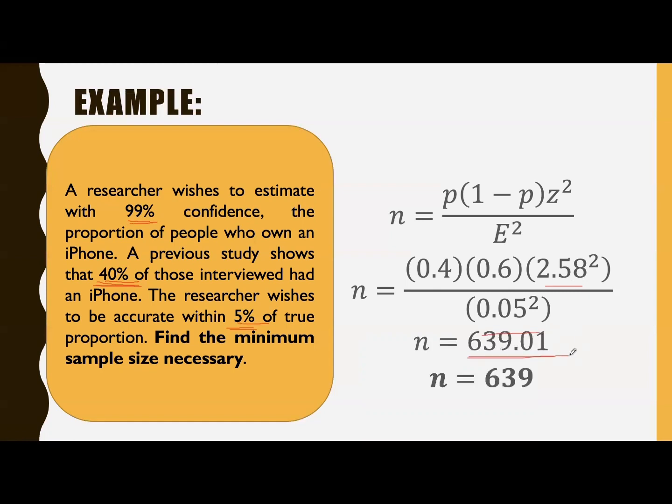And then divide, so you come up with 639.01. Since this is a whole number, since the number of people, this must be discrete. So there must be 639 people to interview or to send a questionnaire to.